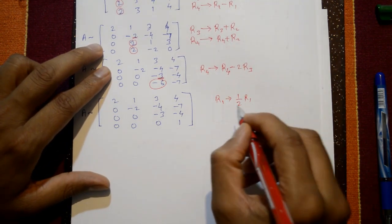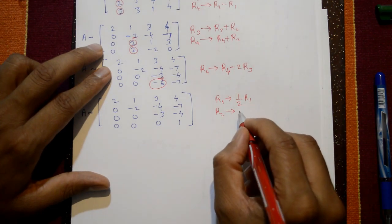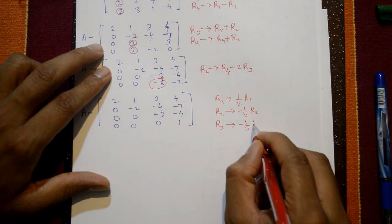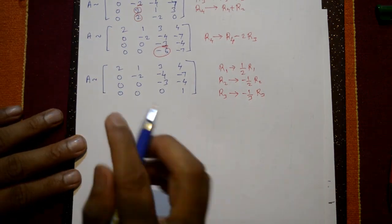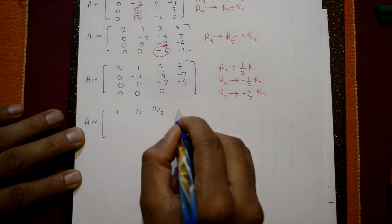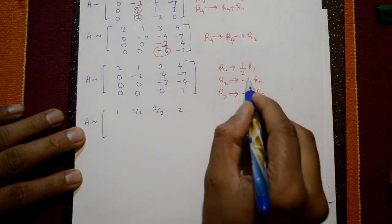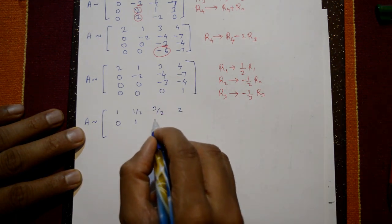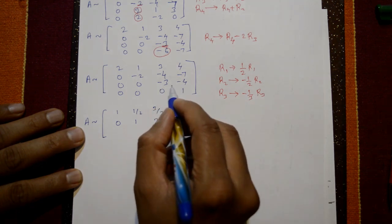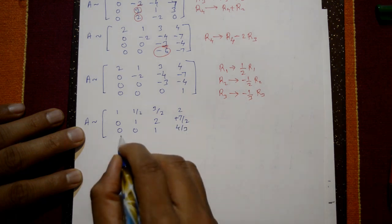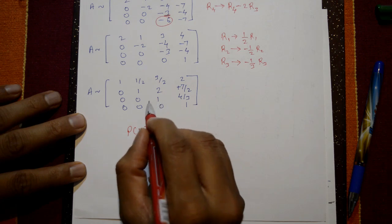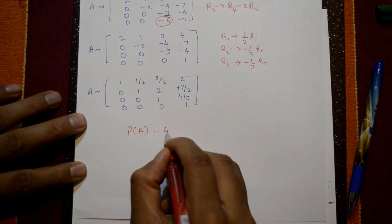To get leading 1s throughout, we scale: R1 = (1/2)R1, R2 = (-1/2)R2, R3 = (-1/3)R3. This gives row 1: 1, 1/2, 3/2, 2; row 2: 0, 1, 2, 7/2; row 3: 0, 0, 1, 4/3; row 4: 0, 0, 0, 1. Counting non-zero rows, the rank of the matrix is 4.